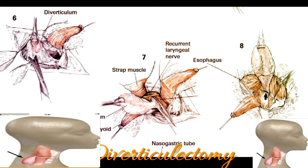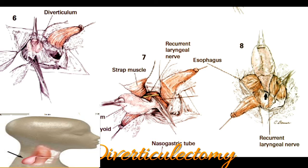The cervical visceral fascia containing the thyroid gland, trachea, and esophagus is entered medial to the carotid sheath. The posterior surfaces of the pharynx and esophagus are exposed by blunt dissection. The diverticulum is then usually easy to recognize unless inflammation is present, causing adhesions to the surrounding structures.